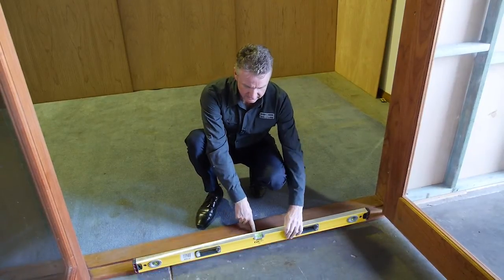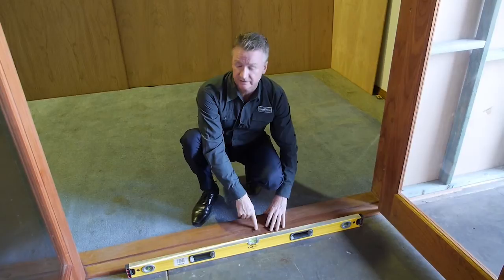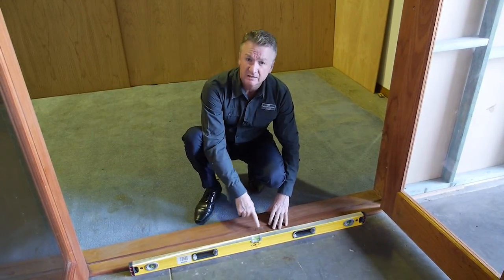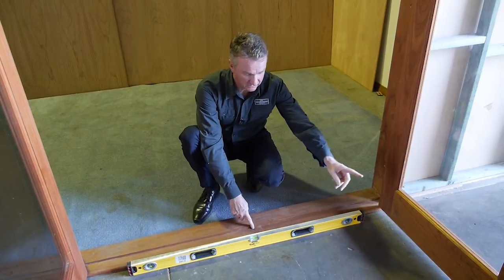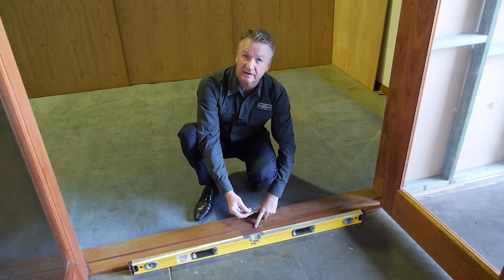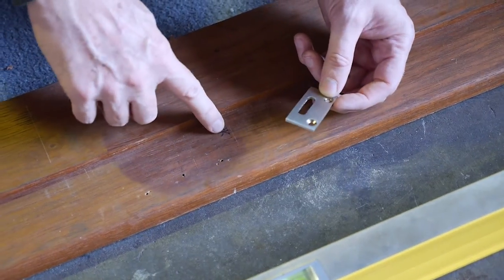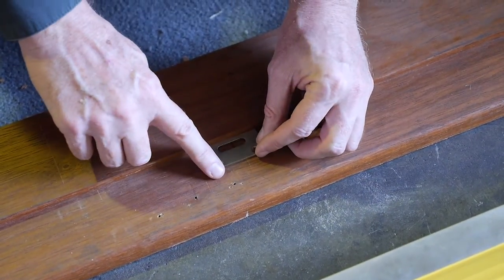We need to fix into the sill down into the concrete and make sure that everything is nice and level. The best thing to do here is to hide the fixing point where the flush bolt on the door lines up with the strike plate. That's where you need to put the fixing screw. Then eventually the plate will go over the top of the screw.